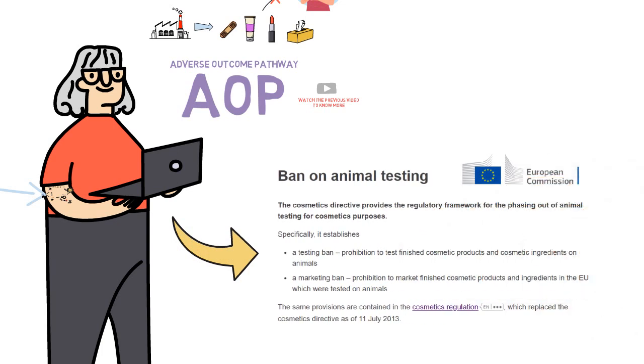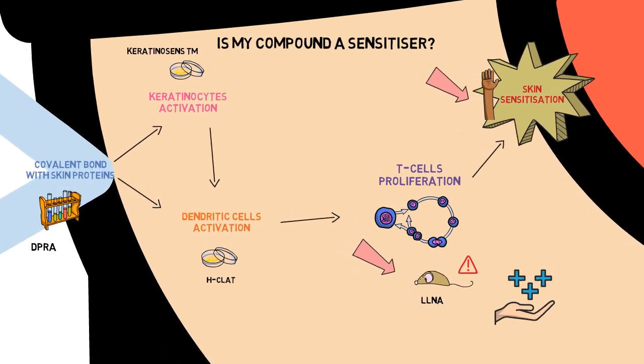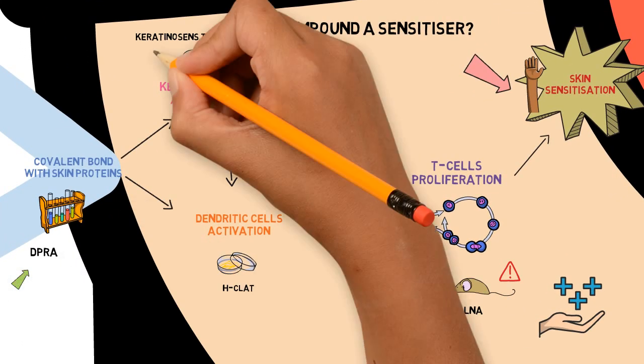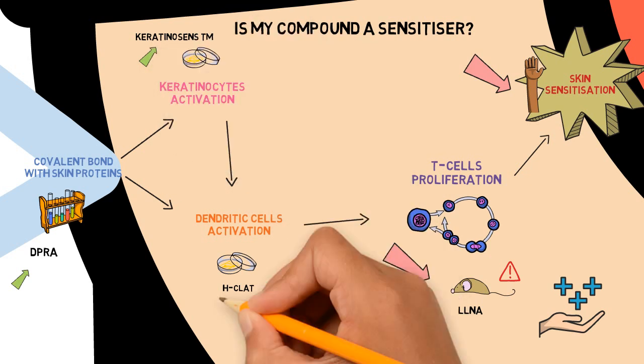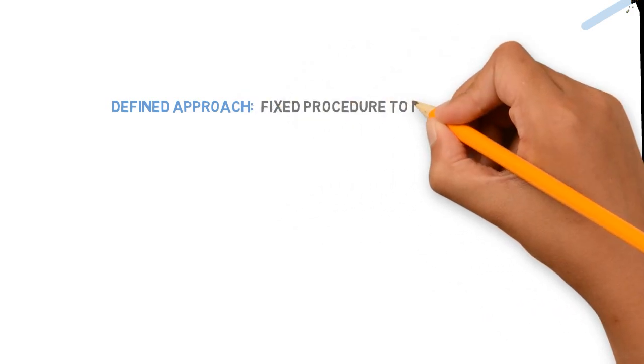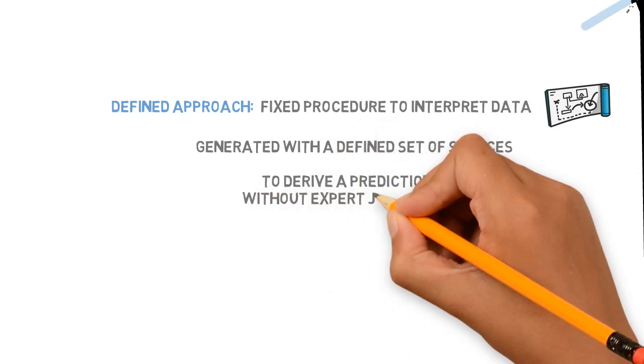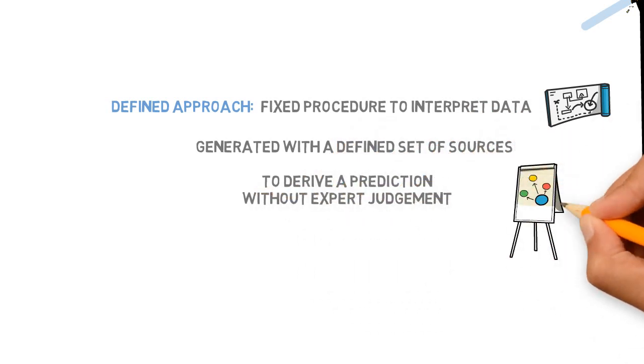So what is the alternative we have? If we know the biological cascade that happens in our body, why not use this knowledge to combine results from more simple assays that can help us predict whether skin sensitization is likely to happen? This is where defined approaches can be helpful. A defined approach is a fixed procedure to interpret data generated with a defined set of sources to derive a prediction without expert judgment.